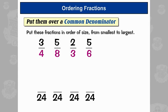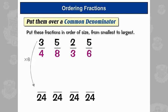Let's start with three-quarters — how many twenty-fourths is that? This is about equivalent fractions. With equivalent fractions you need to make sure that whatever happens to the bottom happens to the top. On the bottom we times by six, so we do the same to the top: three times six is eighteen.